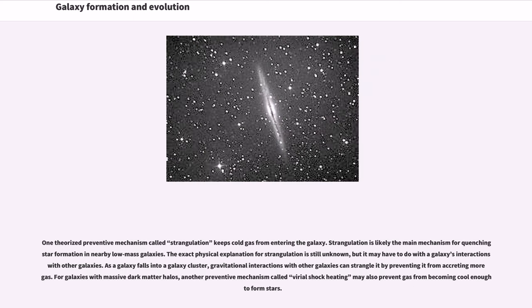One theorized preventive mechanism called strangulation keeps cold gas from entering the galaxy. Strangulation is likely the main mechanism for quenching star formation in nearby low-mass galaxies. The exact physical explanation for strangulation is still unknown, but it may have to do with a galaxy's interactions with other galaxies. As a galaxy falls into a galaxy cluster, gravitational interactions with other galaxies can strangle it by preventing it from accreting more gas. For galaxies with massive dark matter halos, another preventive mechanism called virial shock heating may also prevent gas from becoming cool enough to form stars.